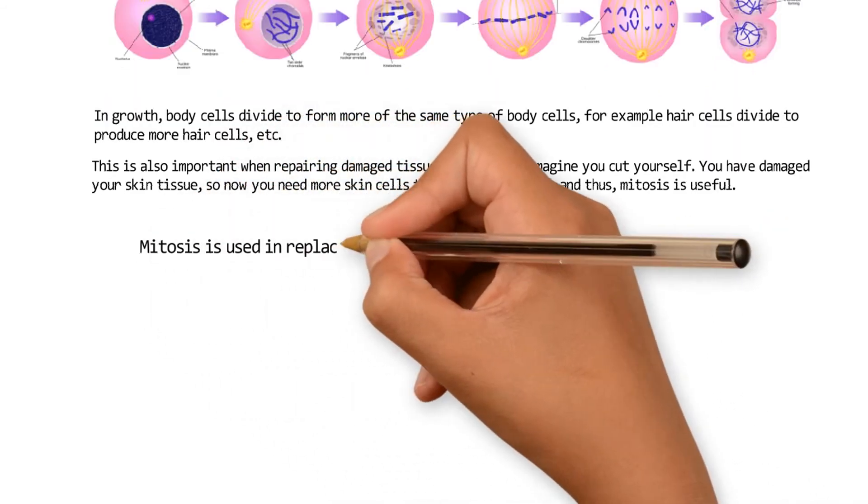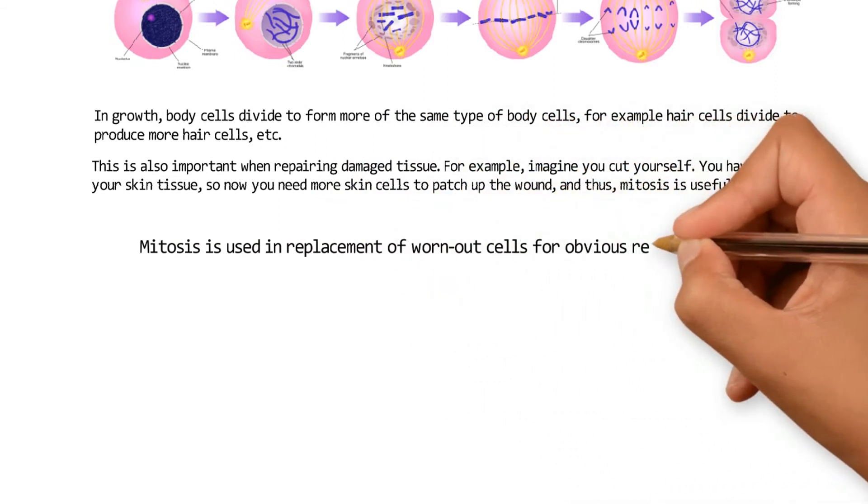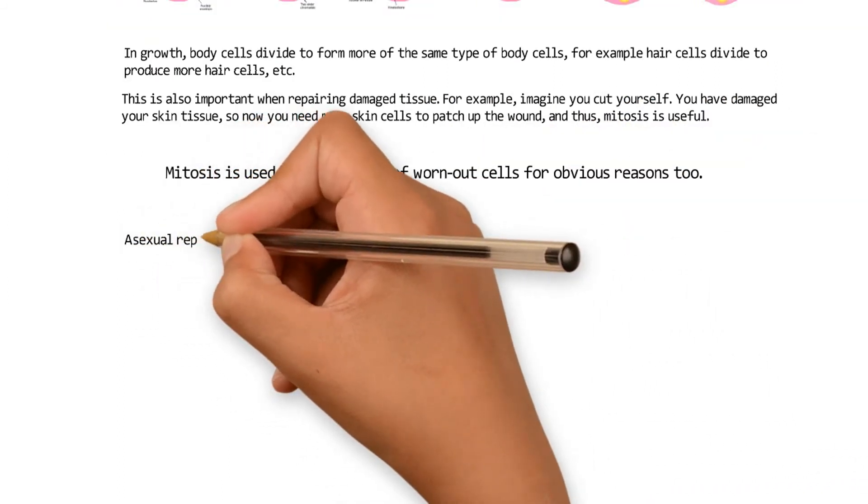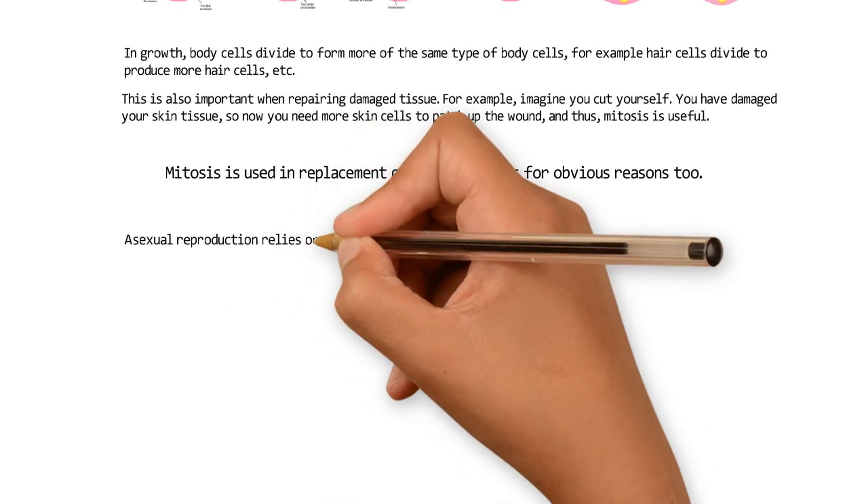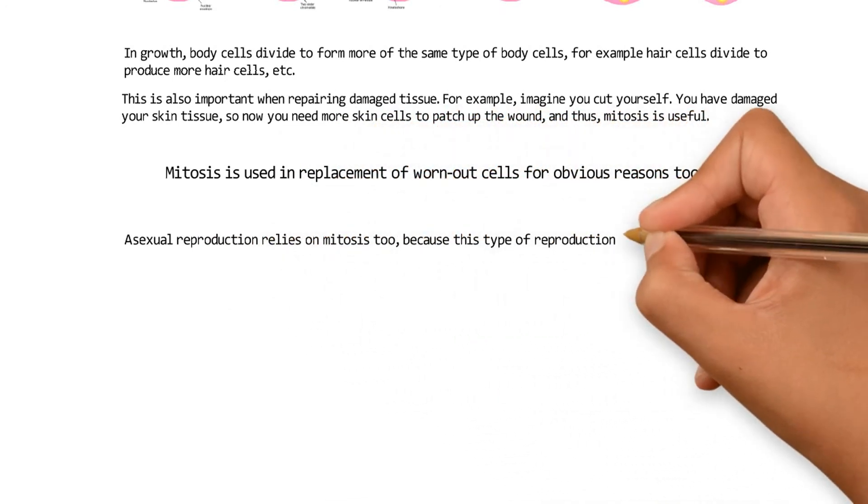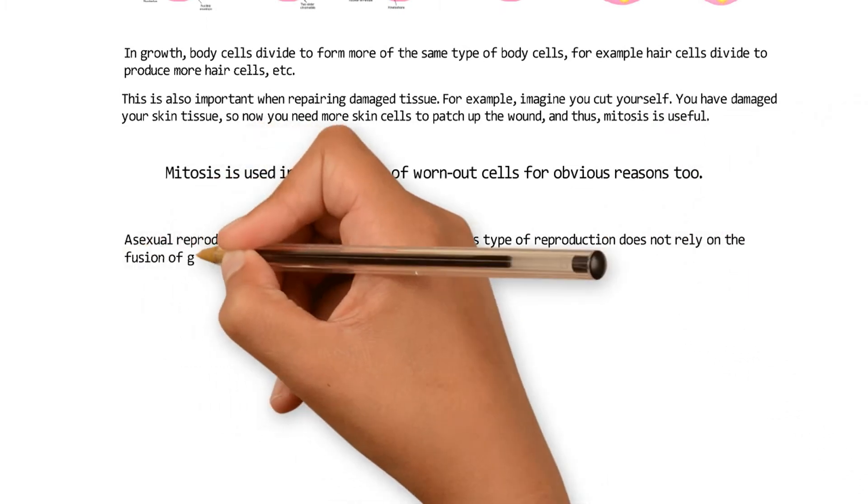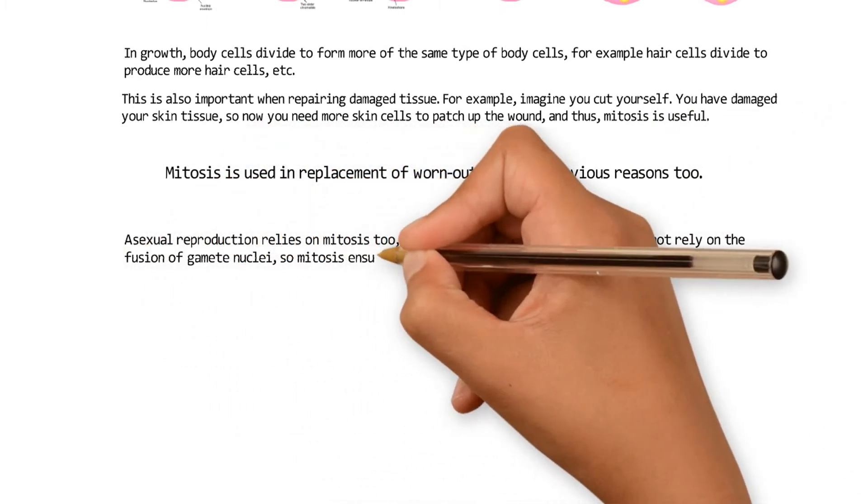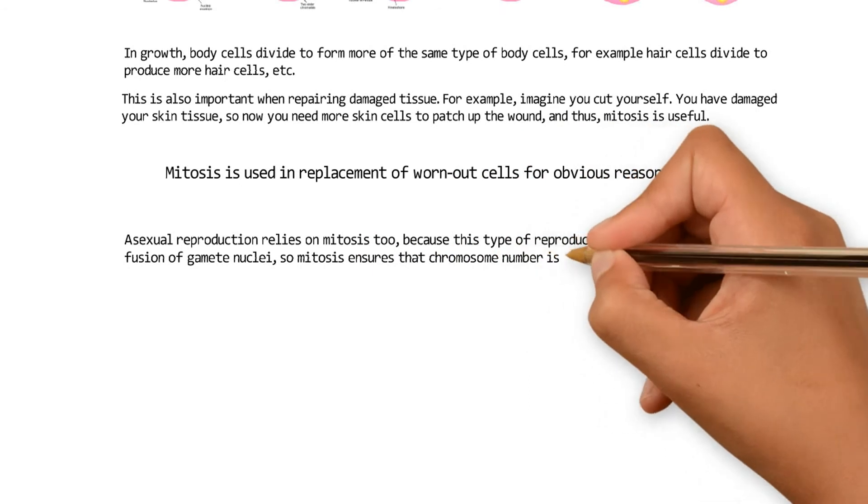Mitosis is used in replacement of worn out cells for obvious reasons too. Asexual reproduction relies on mitosis too because this type of reproduction does not rely on the fusion of gamete nuclei. So mitosis ensures that chromosome number is maintained.